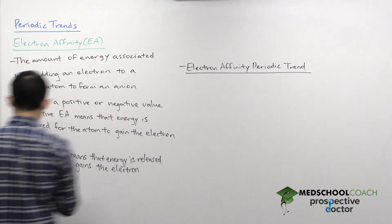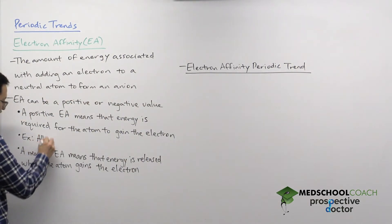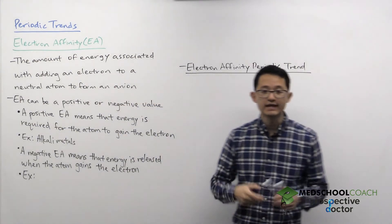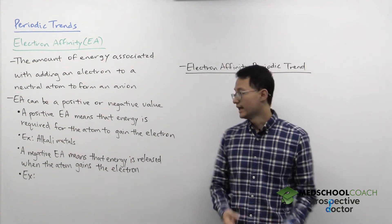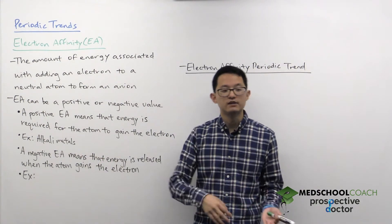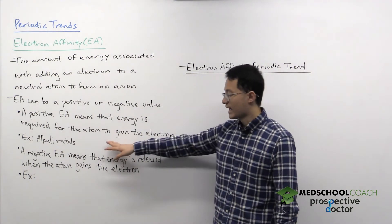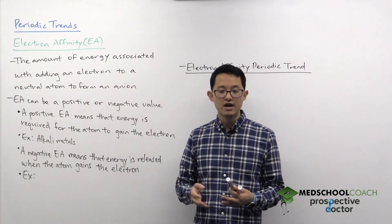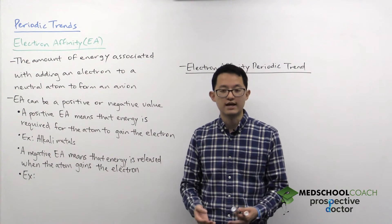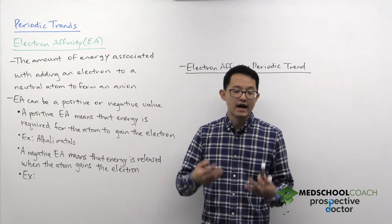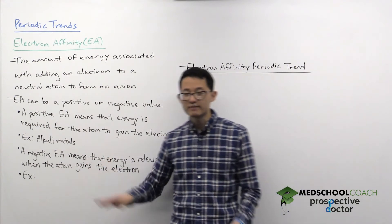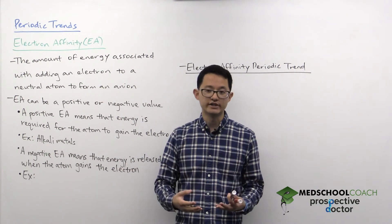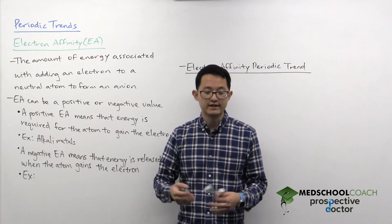A good example of this is the alkali metals. We know that all atoms on the periodic table want to attain noble gas configuration, and alkali metals typically do this by losing an electron. So if you give them an electron with electron affinity, you're actually taking alkali metals farther away from noble gas configuration. They are now less stable and at a higher energy state — they don't want that electron. That's why we have to put in energy to force the alkali metals to take on another electron.